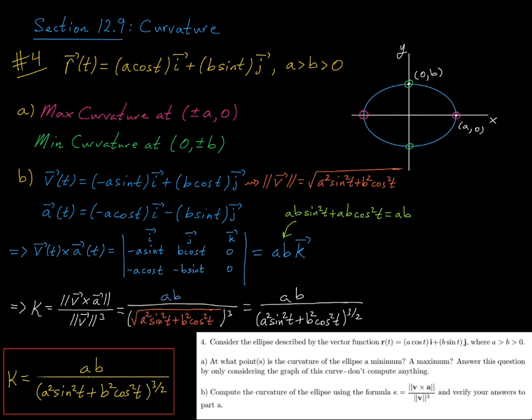For my expression for curvature, right? And so this all boils down to the following result. The curvature of this ellipse is ab over this quantity a squared sine squared t plus b squared cosine squared t, all to the 3 halves power.